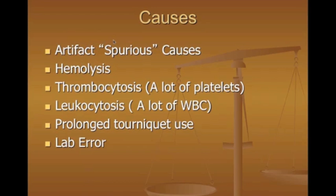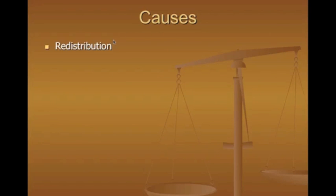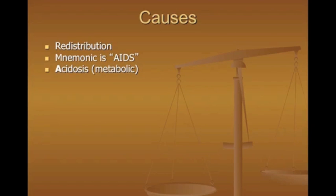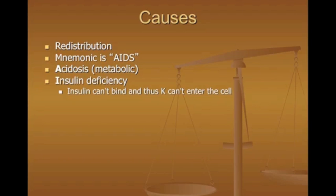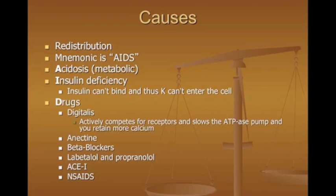For redistribution causes, remember the mnemonic AIDS. 'A' is for acidosis — acidosis will cause a rise in your potassium levels. 'I' is for insulin deficiency — insulin normally helps potassium enter the cell, so without it potassium stays extracellular. In a relative insulin deficiency like type 1 diabetes, you can get a hyperkalemic episode that needs to be treated.